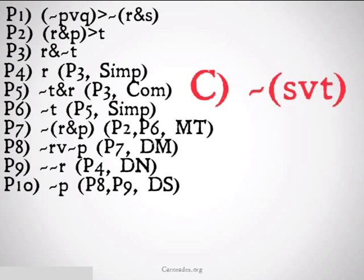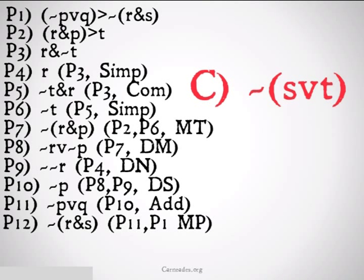So I have not p. I look back to premise one and I see I have not p or q at the front of an implication. Where can I get q? It doesn't show up anywhere else but it's on the end of a disjunction. Because I have not p I can use addition to just throw q on there. From premise ten addition not p or q. Then I'm going to use modus ponens to get not r and s from premise eleven premise one modus ponens. Once again, whenever you have a negation in front of a conjunction you're going to want to use DeMorgan's rule. We end up with not r or not s from premise twelve DeMorgan's rule.